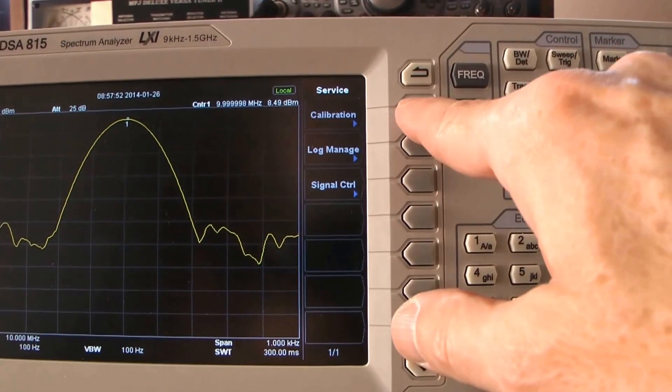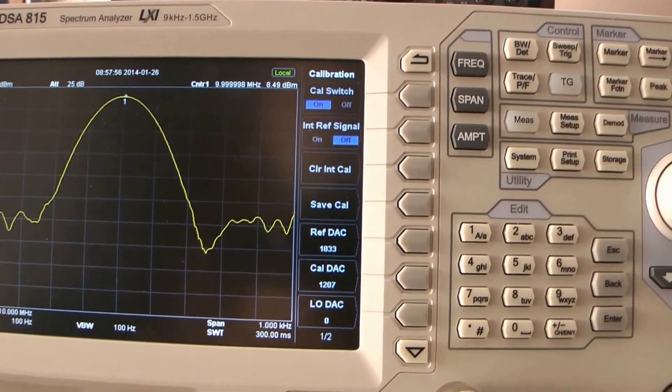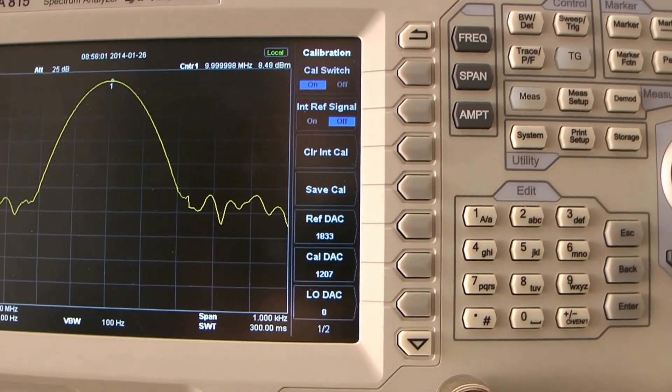Now you have a new item on here called service. Click service, click calibration, and now you have something called the reference DAC, or digital analog converter.